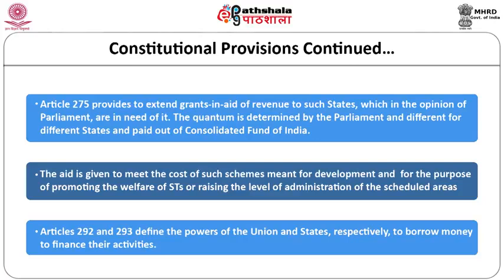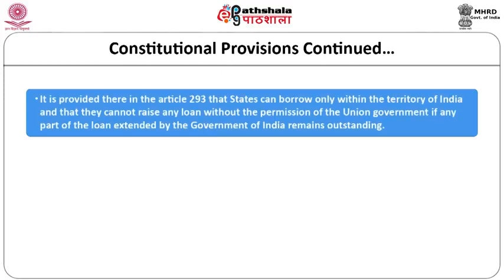Article 293 provides that a state can borrow only within the territory of India, not outside it, and cannot raise any loan without the permission of the union government if any part of a loan extended by the Government of India remains outstanding. The union government, by contrast, can borrow money from anywhere — internationally, nationally, or from the private or public sector. Since almost all state governments have taken loans from the union government, this permission requirement has become a mandatory control mechanism.